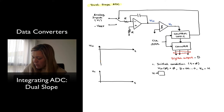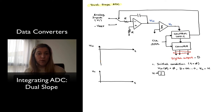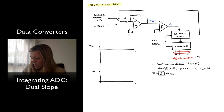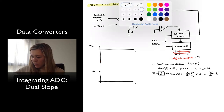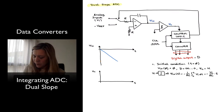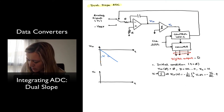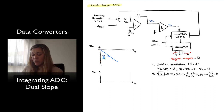We assume that Vin is constant for one conversion cycle — either from a sample-and-hold circuit, or because it varies slowly enough that we can treat it as constant. Therefore, Viout as a function of time is negative one over RC times the integral from zero to t of Vin dt, which equals negative Vin over RC times t. This is a straight line with a negative slope equal to negative Vin over RC, and it varies depending on the value of Vin.